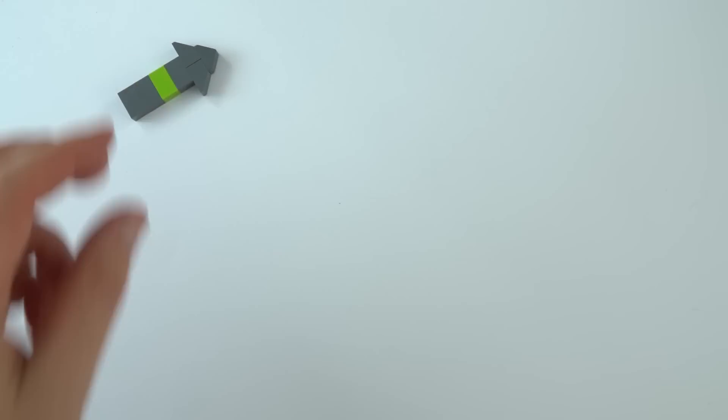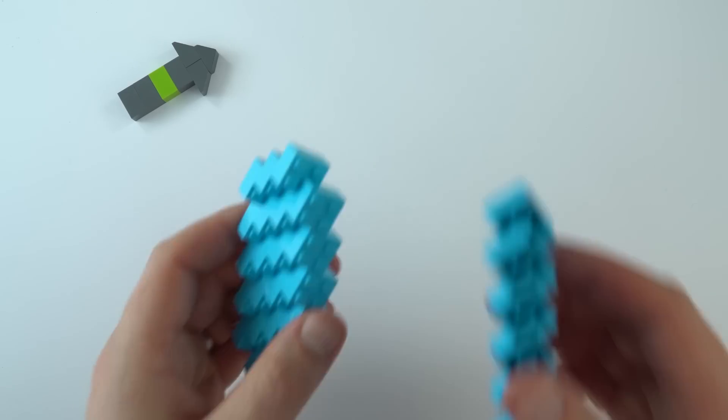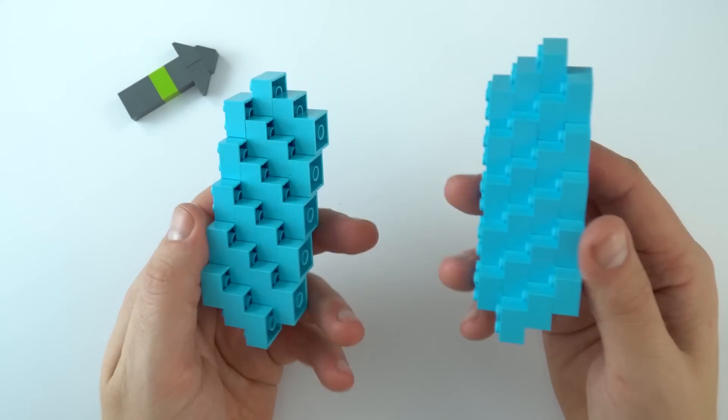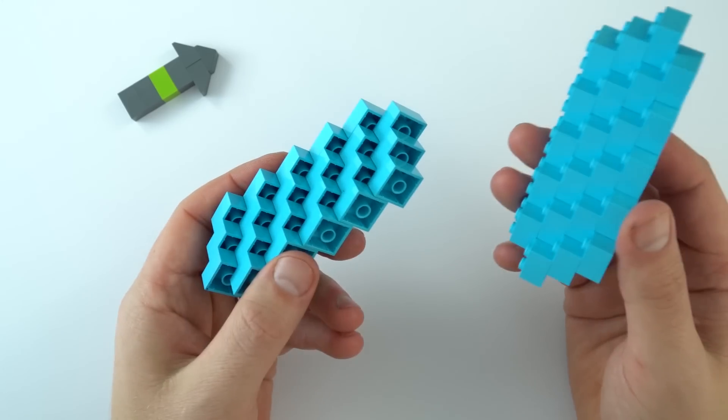Now there's a type of contact force called friction and this is because of the interaction of two surfaces which are touching. Often we're thinking here about solid surfaces.